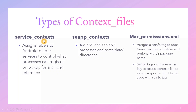Next is service context, which is very important. It assigns labels to Android binder services to control what process can register or look up a binder. We basically use service context for all the system services we write. Service manager reads this configuration during startup. This is used by core services — such as activity manager, package manager, battery manager — every service that the system server starts after boot up. To label them, we use service context.